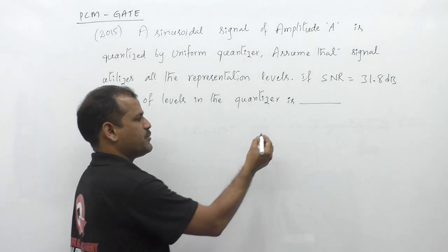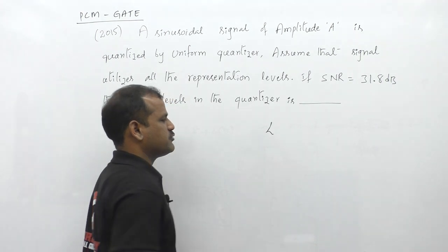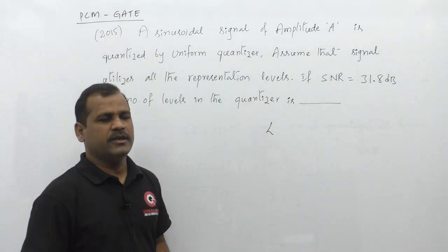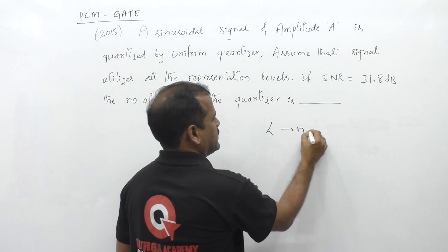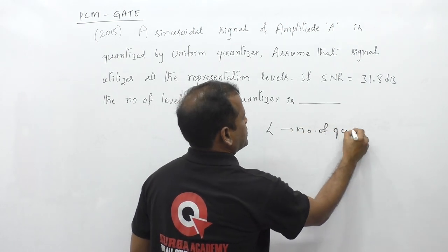What is asked is to find the number of quantization levels used by the quantizer in the PCM system. So we need to find L, where L is the number of quantization levels.